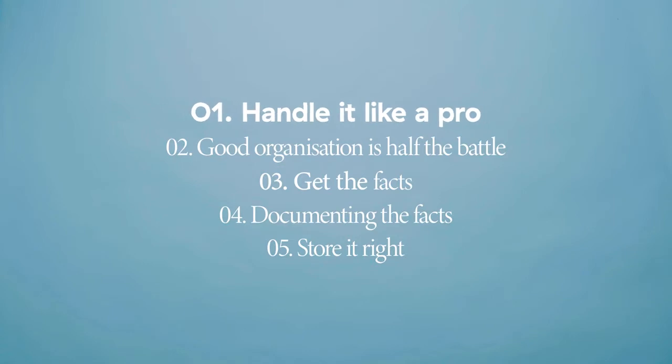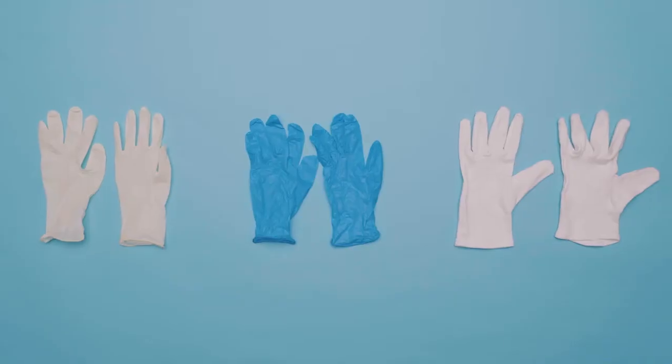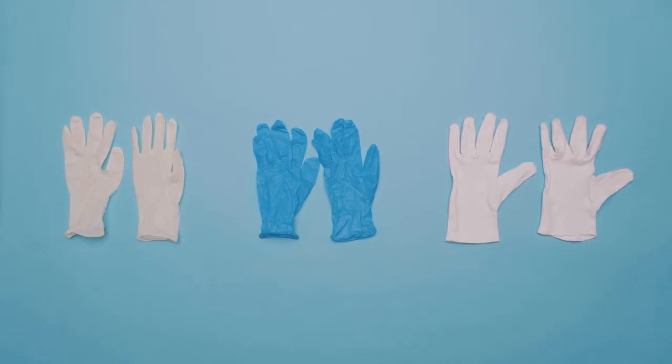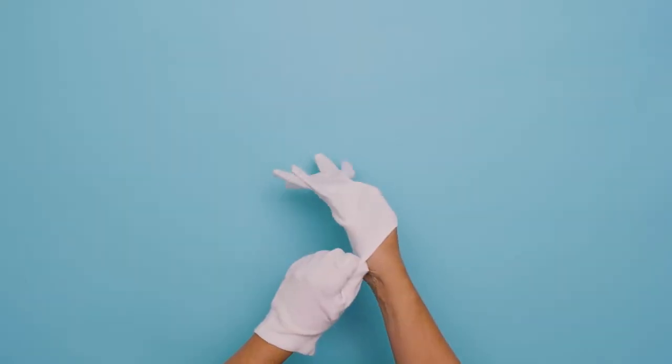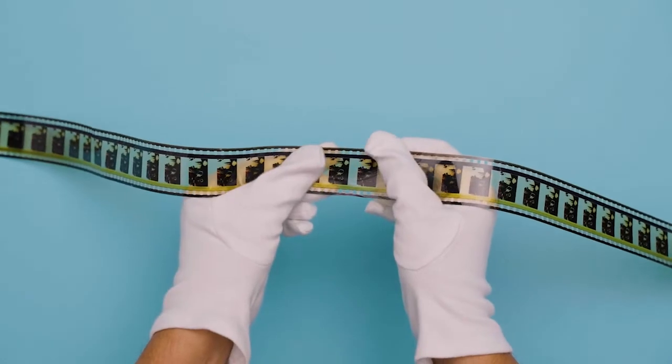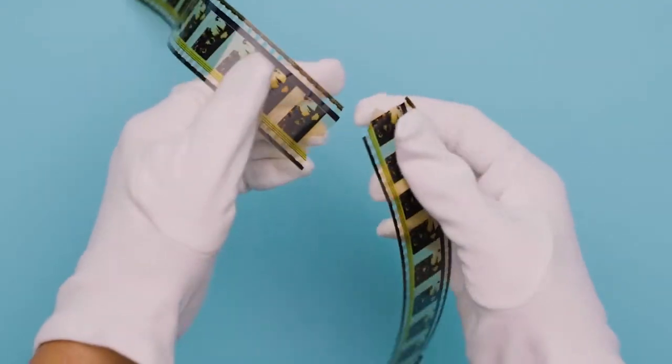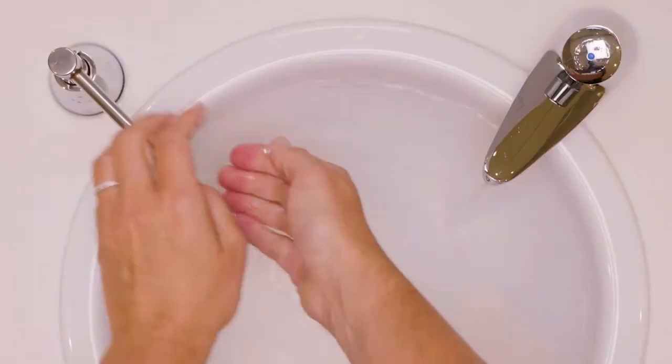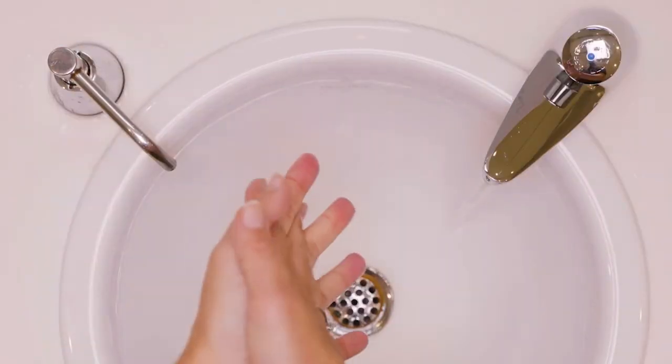One. Handle it like a pro. Despite what you may think, gloves are not always the best way to go. Cotton gloves especially might make you clumsier and you might end up damaging the document you are handling. When you are working with film and audio documents, your best option is always clean, dry hands.